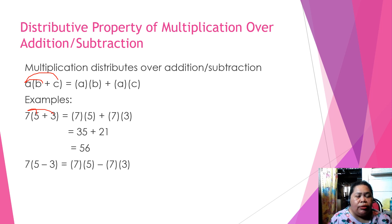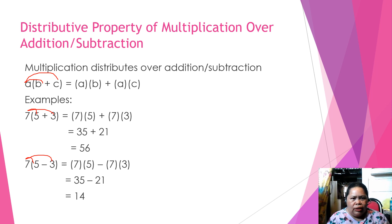The same thing also if we are going to subtract. We distribute also. So we have 7 times 5 minus 7 times 3. That is 35 minus 21. That is equal to 14.